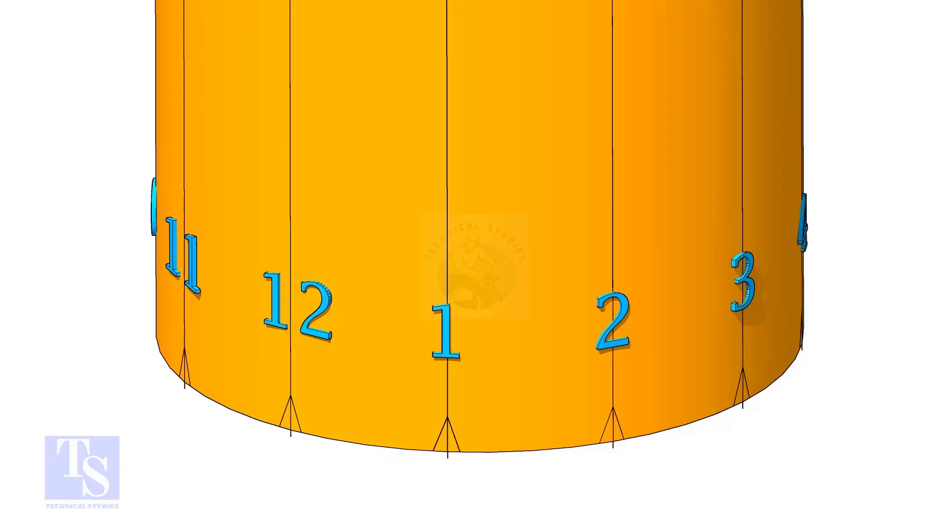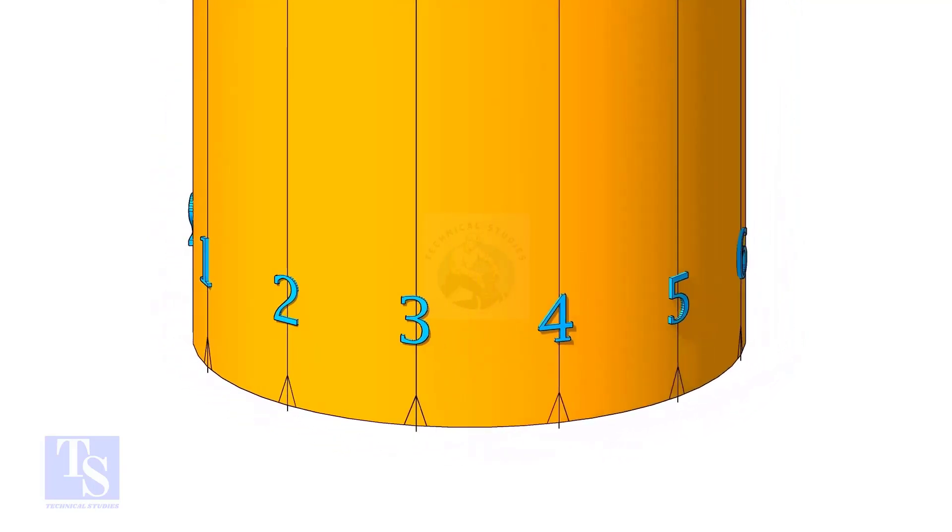Divide the branch pipe into equal parts. In this case, I divide the pipe into 12 parts.